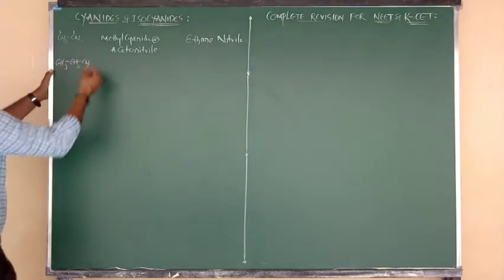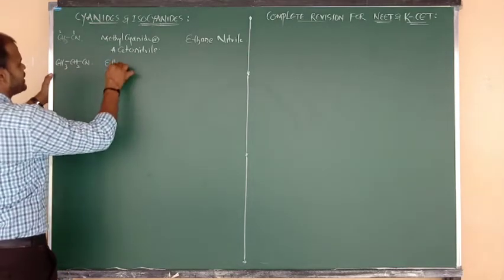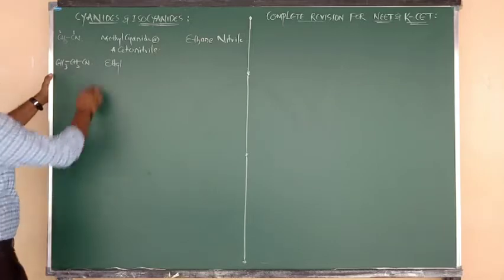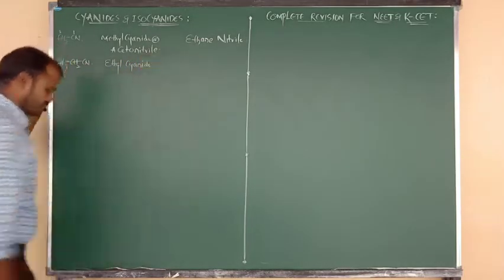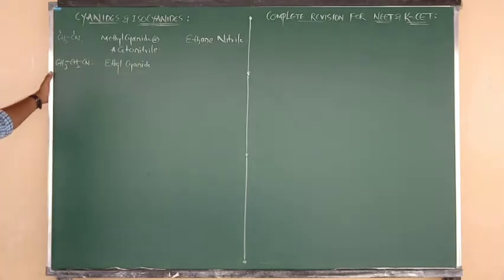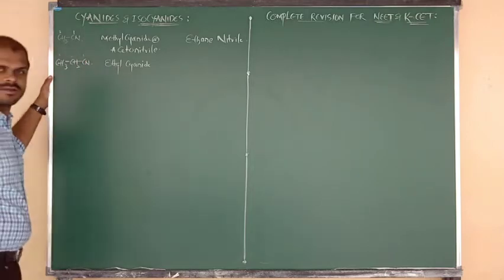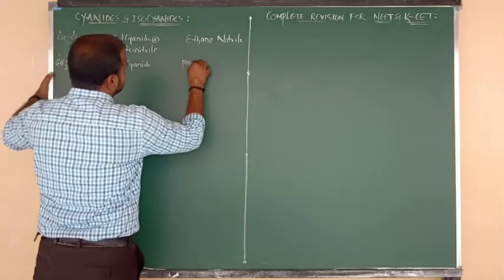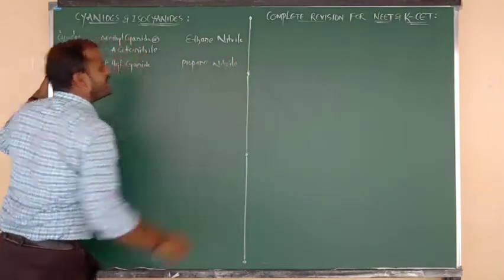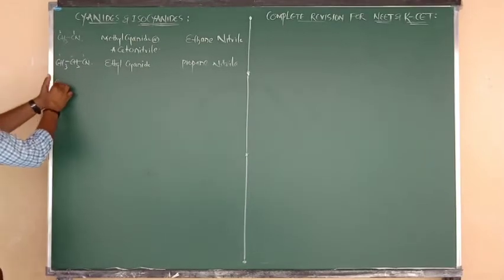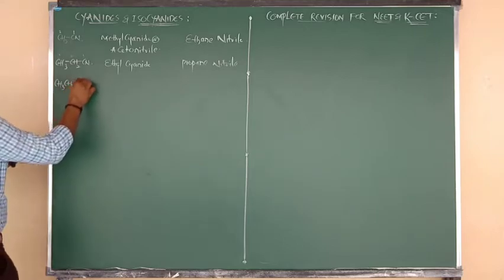Next compound: CN bonded to CH2CH2 — two carbons in the alkyl chain make it an ethyl group connected to CN, so the common name is ethyl cyanide. For the IUPAC name, carbon number one, two, three — three carbons total — so the IUPAC name is propanenitrile.